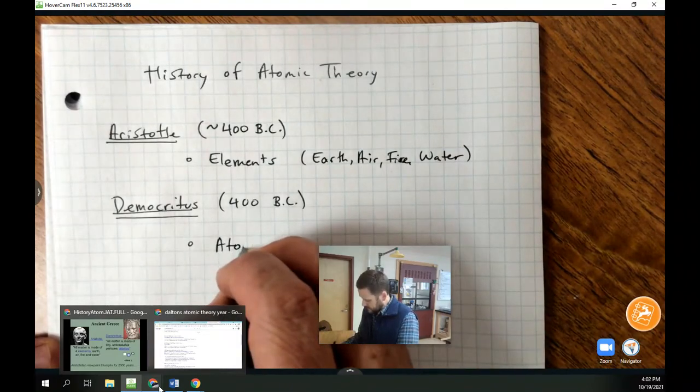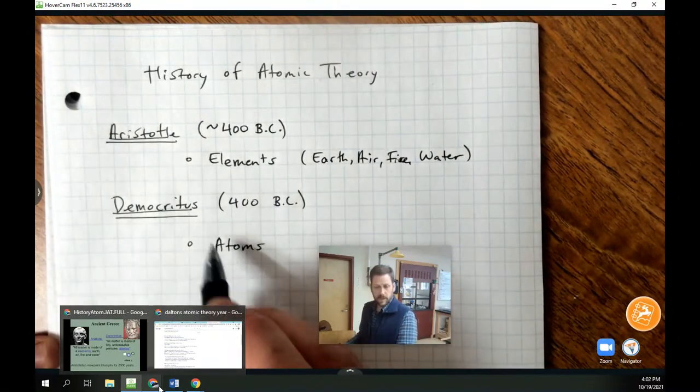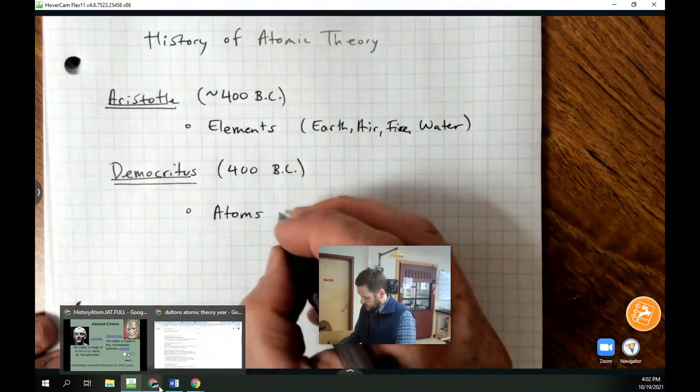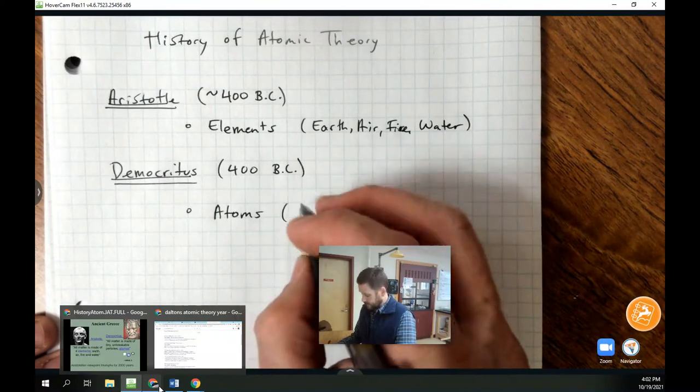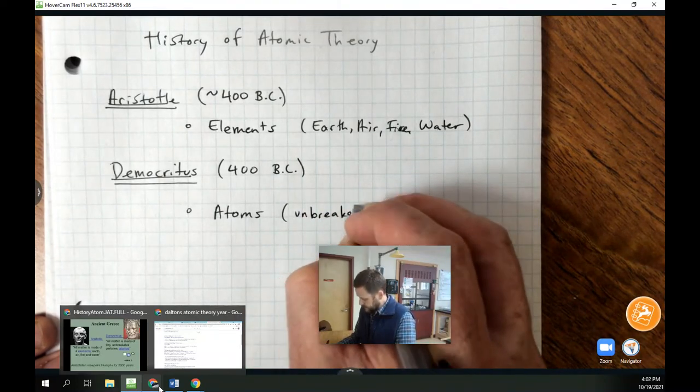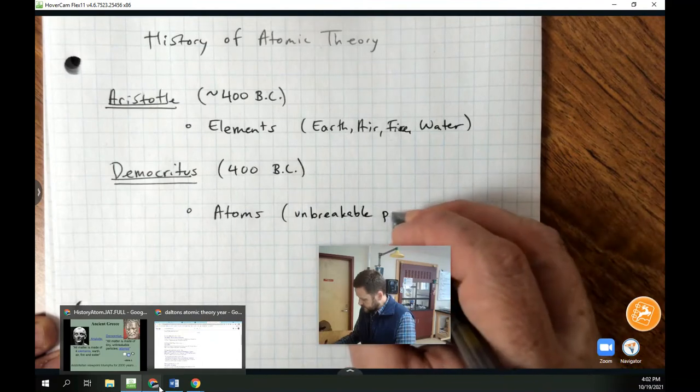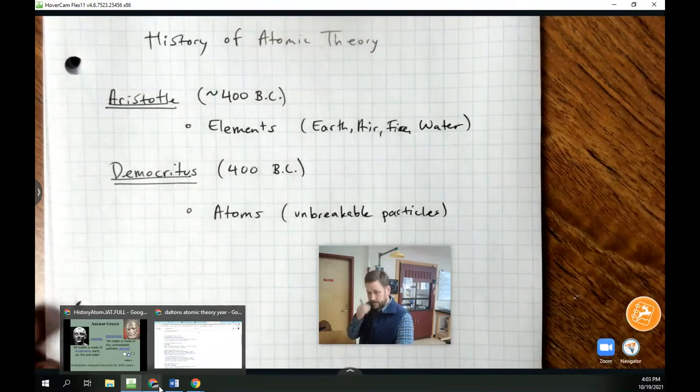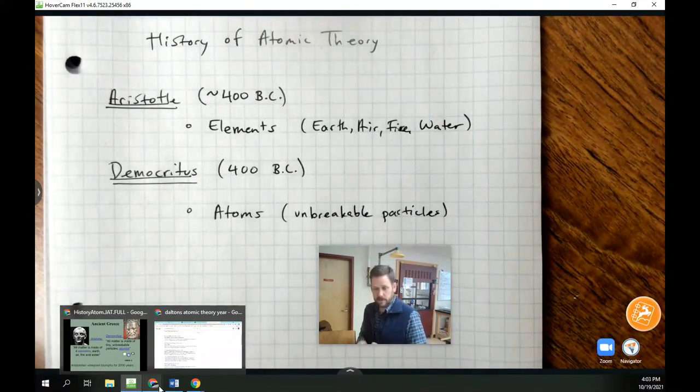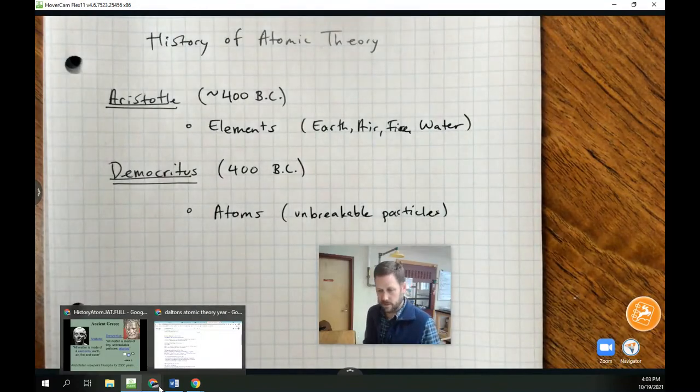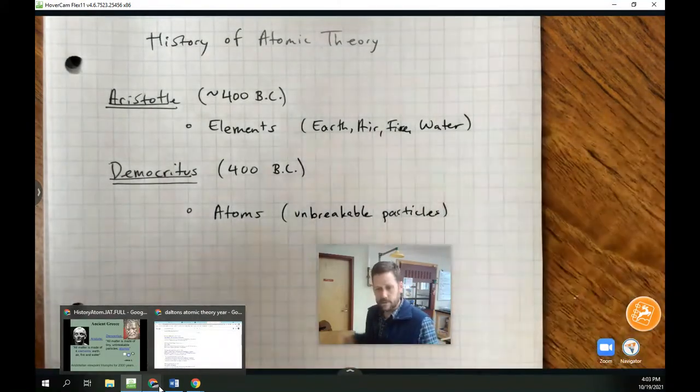And the idea of atoms, which really comes from the Greek word for unbreakable, is that all matter is made of tiny, unbreakable particles. And this is very different than Aristotle's idea, which is more about elements having a certain essence, as opposed to being particulate in nature. They really are kind of essential in nature.